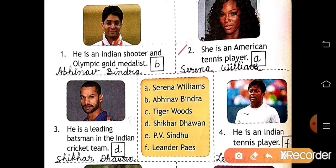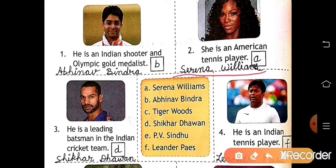Now the second: C is an American tennis player. So who is it? Serena Williams. Write the name here — Serena Williams. And in the clue box, her number is A, so write A here.